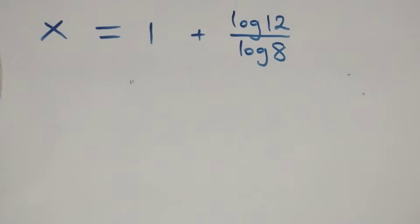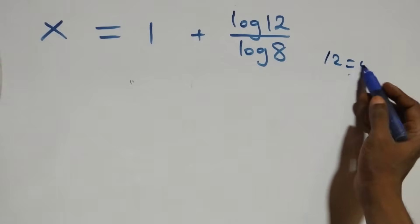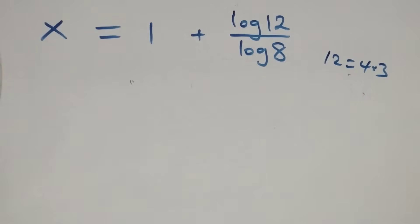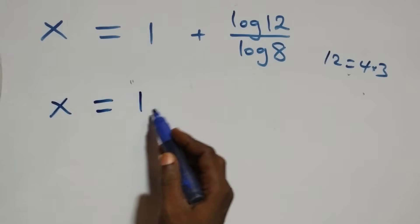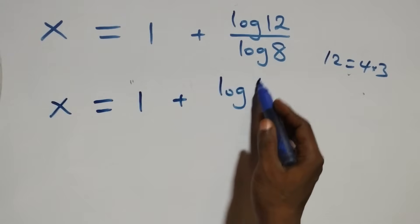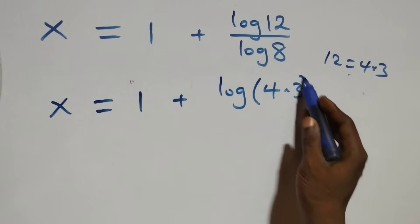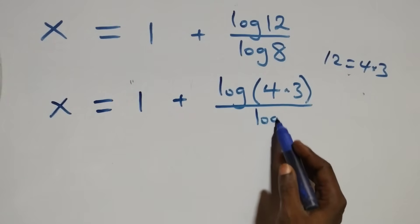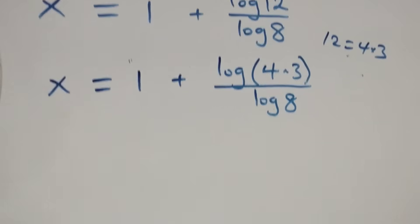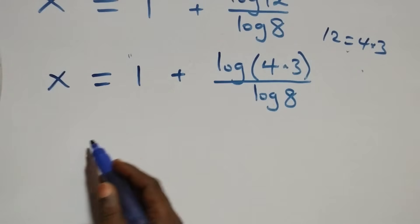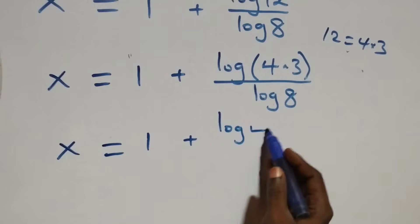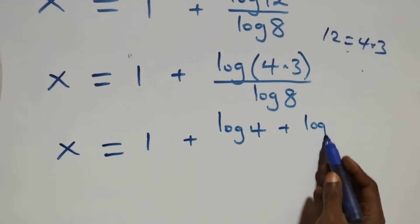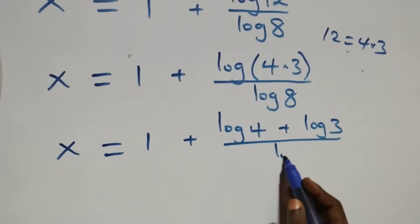We can write 12 as 4 times 3. So this becomes x equals 1 plus log(4 × 3) over log 8. Applying the product rule of logarithms again, this becomes x equals 1 plus (log 4 + log 3) over log 8.